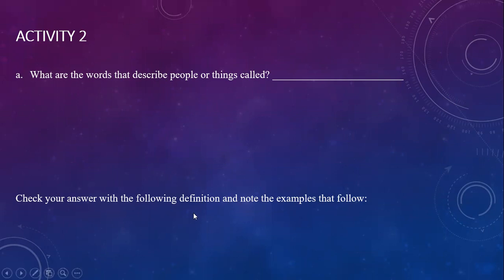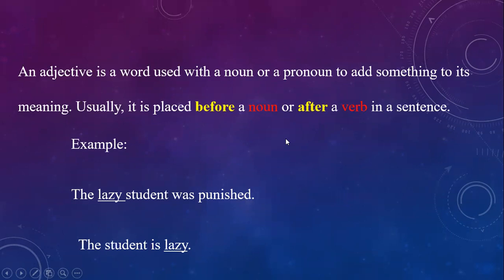Check your answers with the following definition. An adjective is a word used with a noun or pronoun to add something to its meaning. Usually it is placed before a noun or after a verb in a sentence. Example: 'The lazy student was punished' — here 'student' is the noun and 'lazy' is the adjective placed before the noun. 'The student is lazy' — here 'lazy' is placed after the verb 'is.'